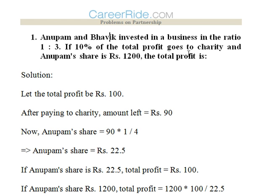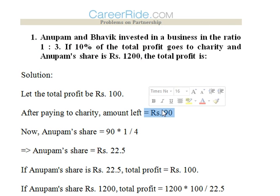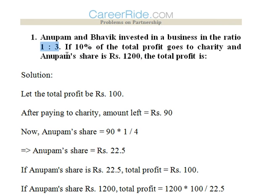Anupam and Bhavik invested in a business in the ratio 1:3. If 10% of the total profit goes to charity and Anupam's share is 1200, what is the total profit? We don't know the total profit so we can assume total profit as 100. We know that 10% of the total profit goes to charity, so only 90 is left. Out of 90, Anupam's share would be 1/4 — since Anupam and Bhavik are sharing in the ratio 1:3 — so 1/4 into 90 is 22.5.